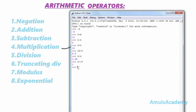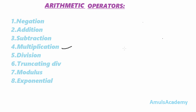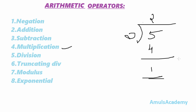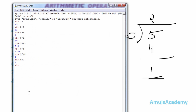The next one is modulus. Modulus gives the remainder as the result. For example, 5 modulus 2 — the percentage symbol is used as the modulus symbol. The answer is 1. For 5 modulus 2, since 2 times 2 equals 4, the remainder is 1, so we get the answer as 1.